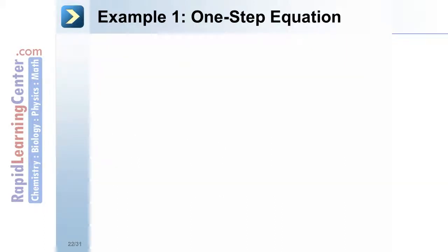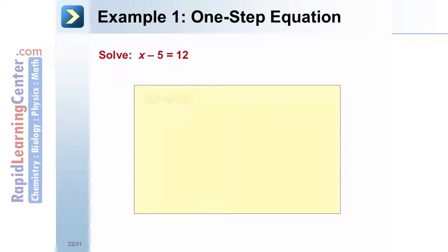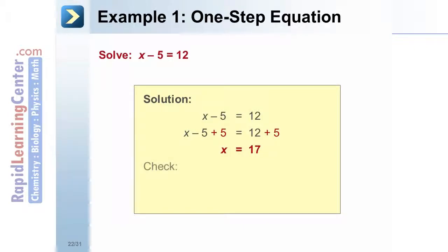Example 1 — one-step equation: solve the equation x minus 5 equals 12. Solution: perform the inverse operation and add 5 to both sides. x equals 17. To check the solution, substitute 17 into the original equation. Since both sides are equal, the solution is verified.